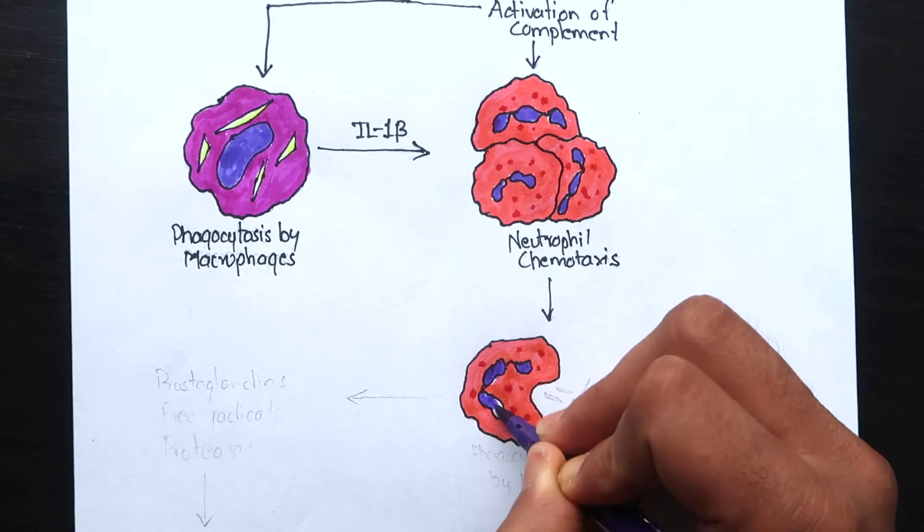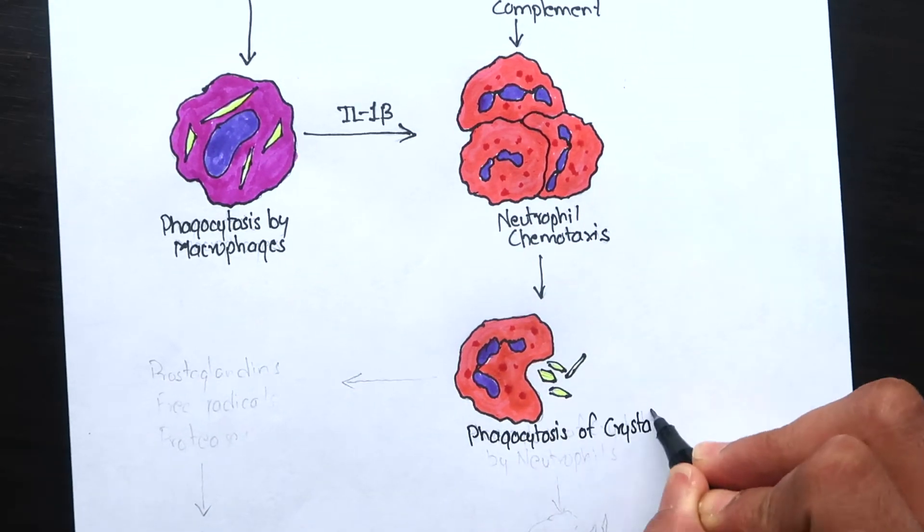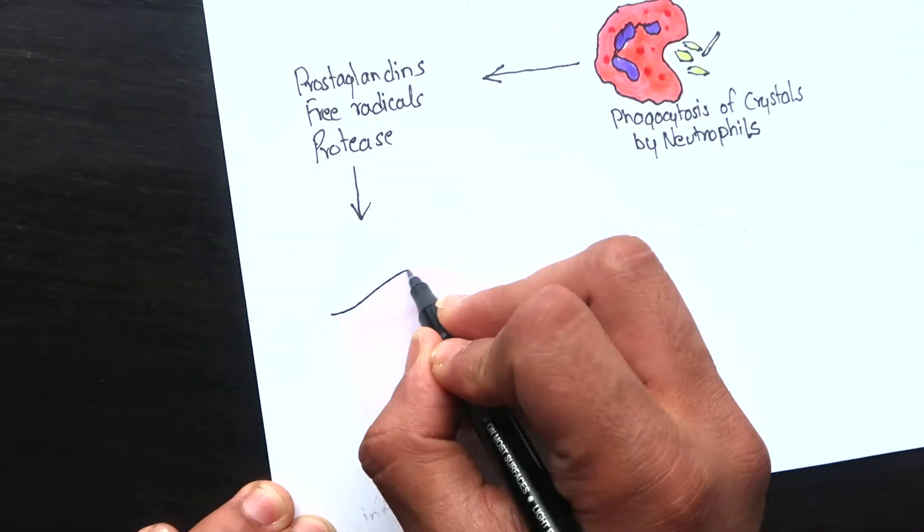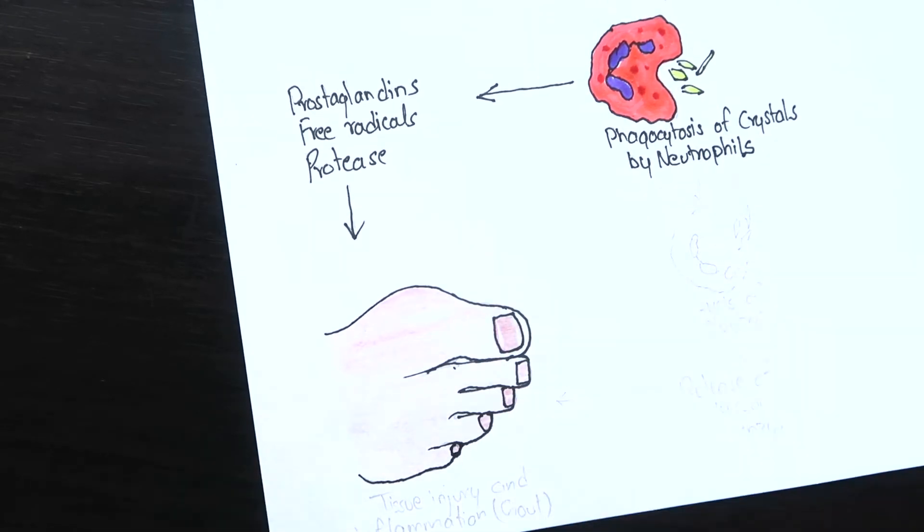The neutrophils will also phagocytose the uric crystals and produce destructive free radicals, proteases and prostaglandins. These will destroy the joint tissues and enhance inflammation ultimately leading to gout.